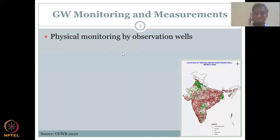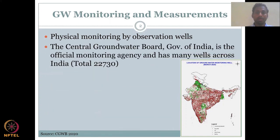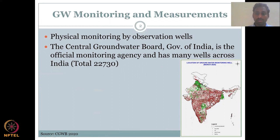The central government program is based on physical monitoring by observation wells — no modelling, they actually measure, which is very important. The Central Groundwater Board has a total of 22,730 wells as per the latest 2020 report. The location of wells is concentrated in the most important states for agriculture, with fewer wells in Rajasthan due to desert and semi-arid conditions, and none in hilly regions.